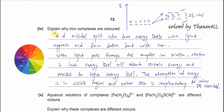The d orbitals split into two energy levels. Once d-d splitting has occurred, when light passes through the complex ion solution, electrons at the lower energy level absorb certain wavelengths of light and become excited, jumping up to the higher energy level.